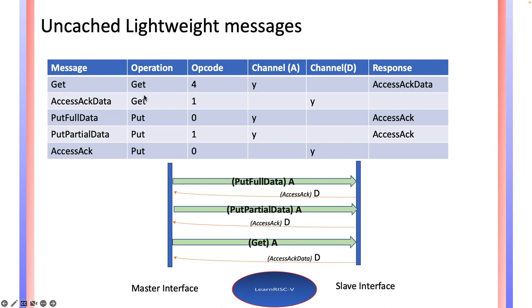The last column lists the response that a message expects. For example, if the master interface sends a get, then the slave interface would send AccessAckData back to the master interface. So this get receives a response from the slave interface.